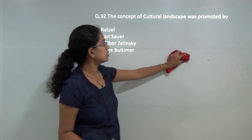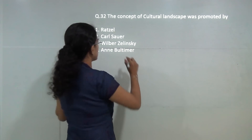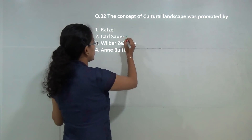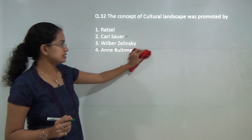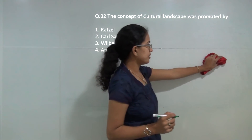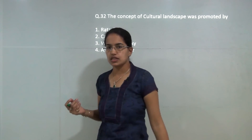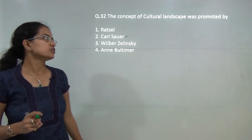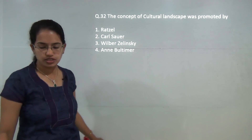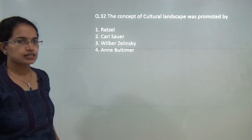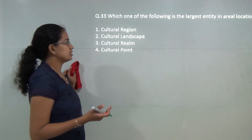The next question: the concept of cultural landscape was given by Carl Sauer. Option 2 is the correct answer. It is important to note that this time there were more questions on cultural geography, so it is important to focus on cultural aspects for the upcoming exams as well.